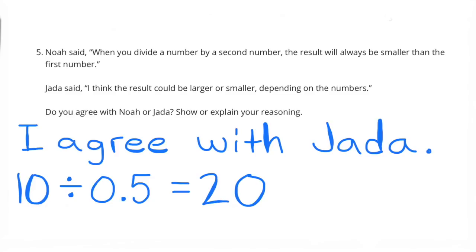I agree with Jada. One example that explains my reasoning is 10 divided by 5 tenths equals 20. 20 is larger than 10. If a number is divided by a number that is between 0 and 1, the result is always larger than the first number.